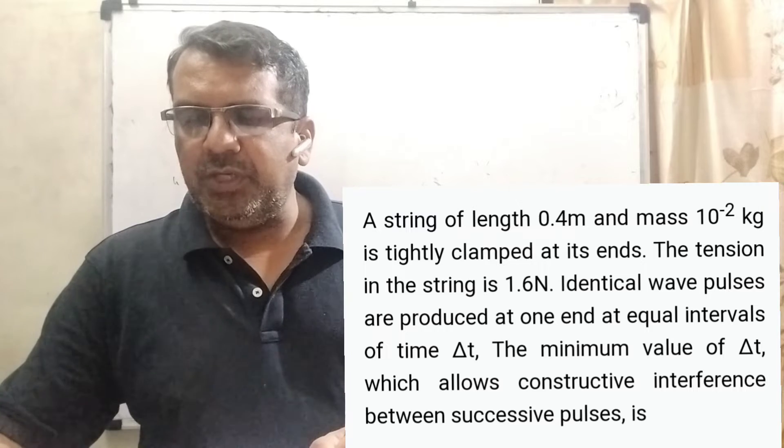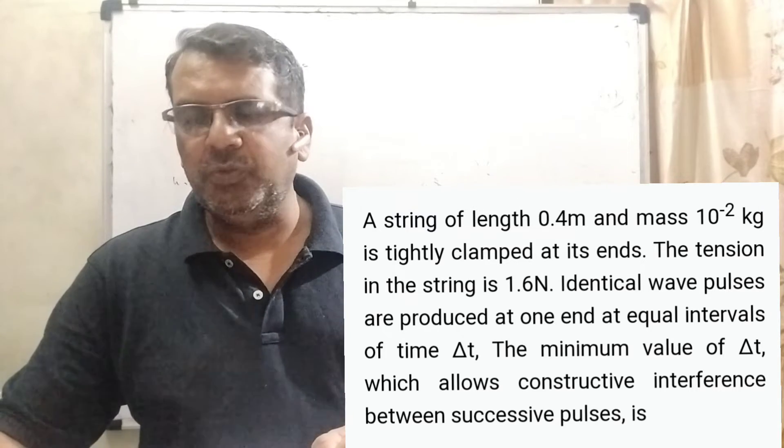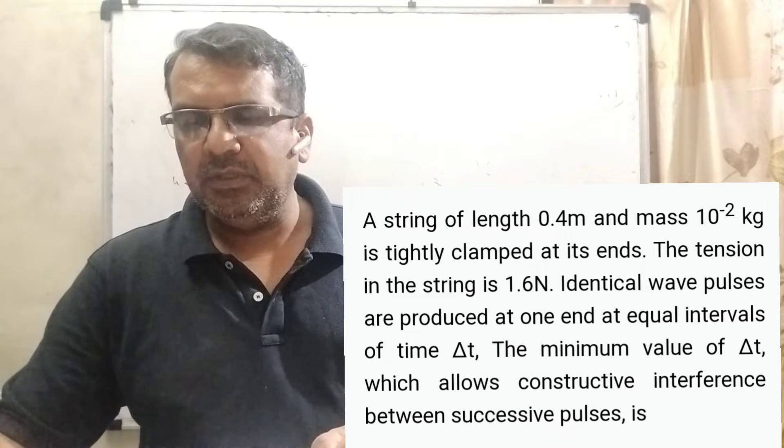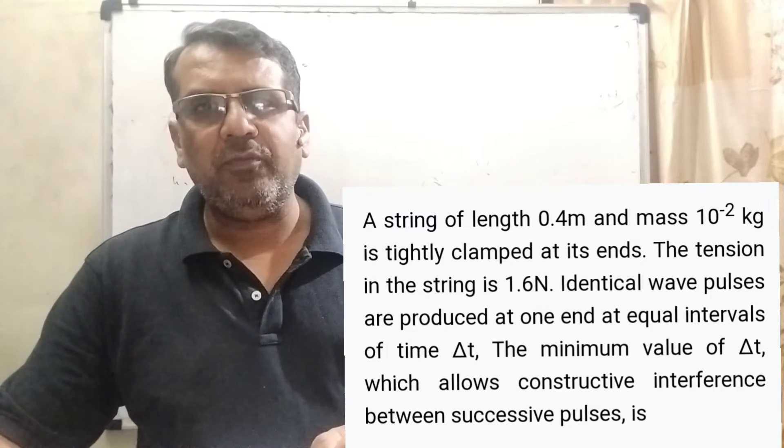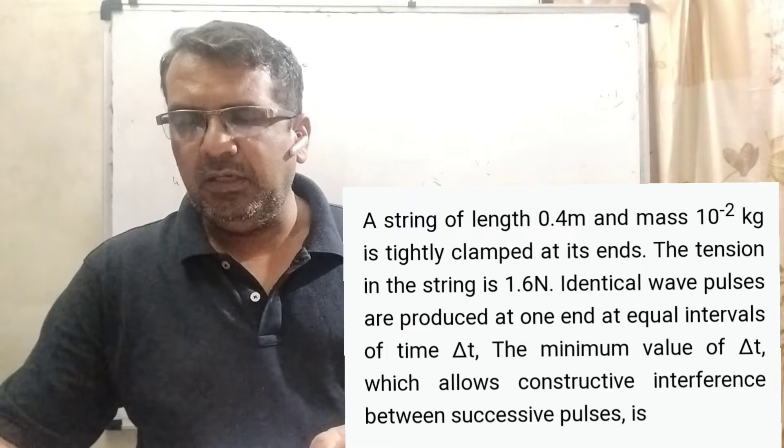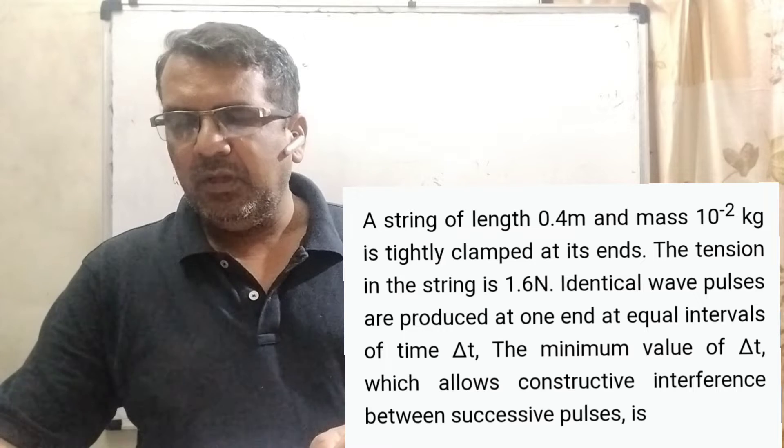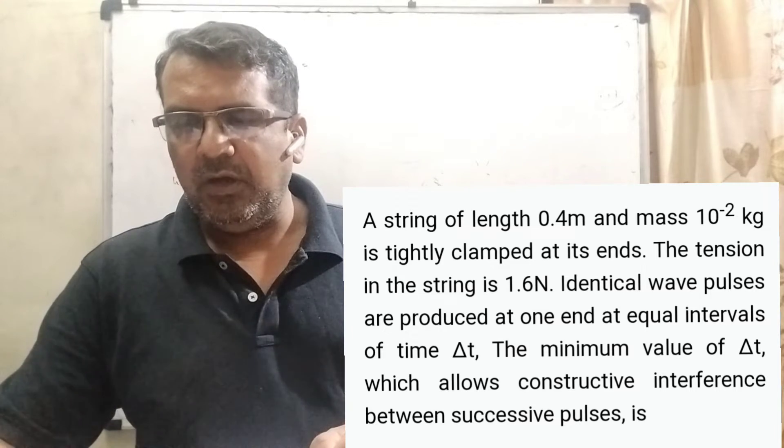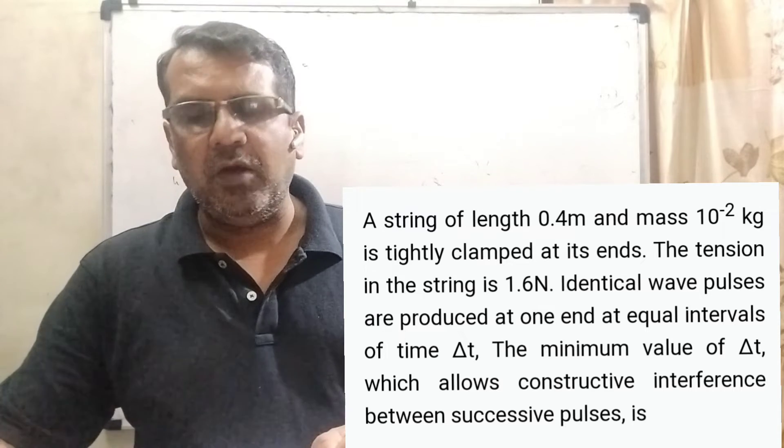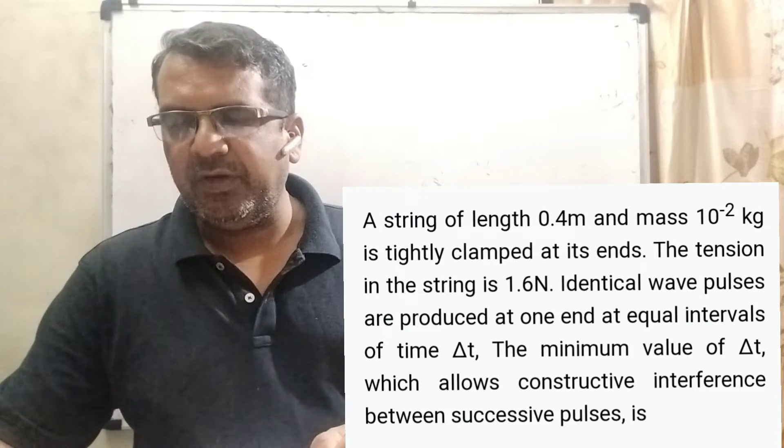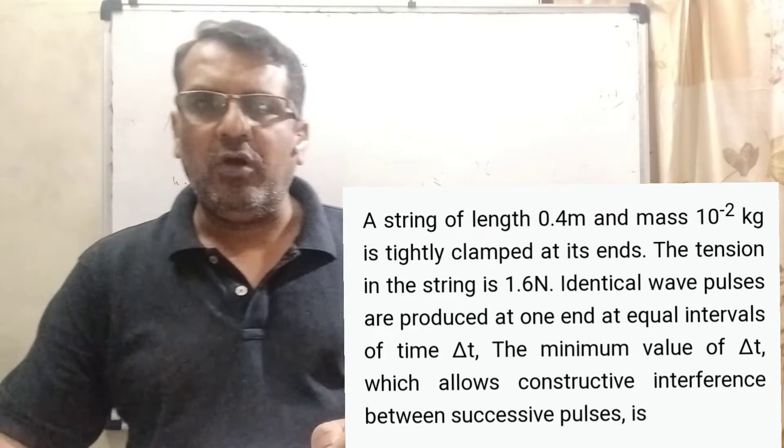Now here is the question. A string of length 0.4 meter and mass 10^-2 kg is tightly clamped at its ends. The tension in the string is 1.6 N. Identical wave pulses are produced at one end at equal intervals of time Delta T. The minimum value of Delta T which allows constructive interference between successive pulses is.